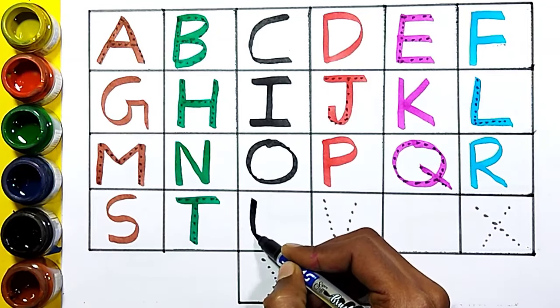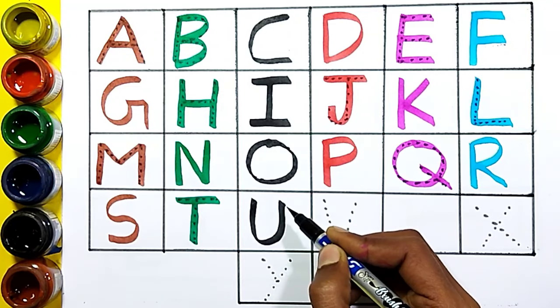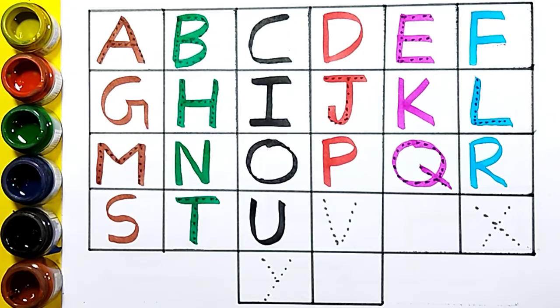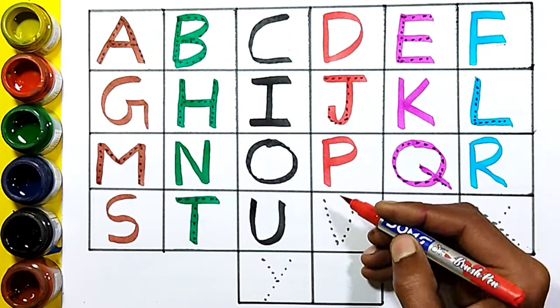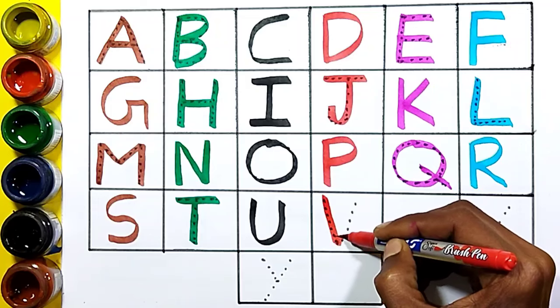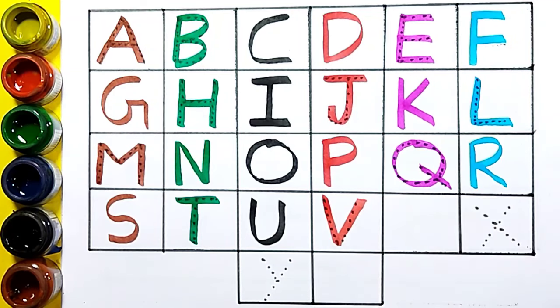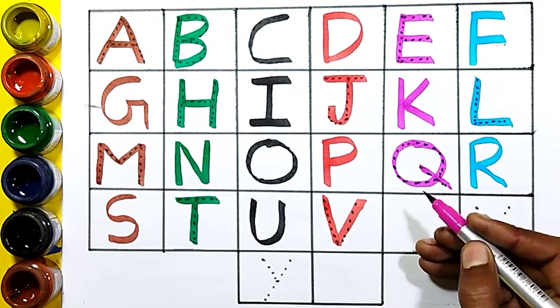U, U for umbrella, red color. V, B for pen, pink color.